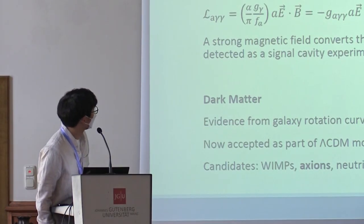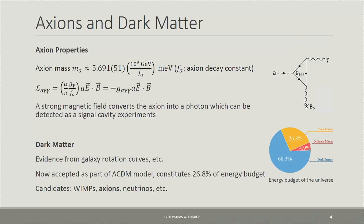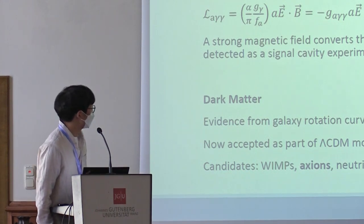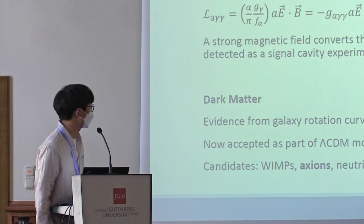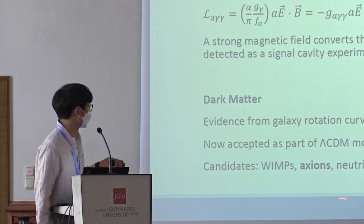The axion has a mass around the micro-electronvolt range. Because of how the Lagrangian term works, it is possible to detect the axion when it converts into a photon in the presence of a strong magnetic field — this is the main detection method used in cavity haloscope experiments. Axions are also a strong dark matter candidate, supported by galaxy rotation curves, and feature in the standard Lambda-CDM model alongside WIMPs.